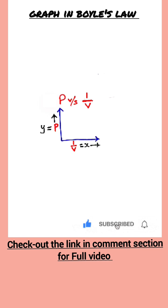Whenever I am supposed to draw any curve regarding Boyle's law, I will always start with the basic equation. P is equals to K divided by V.